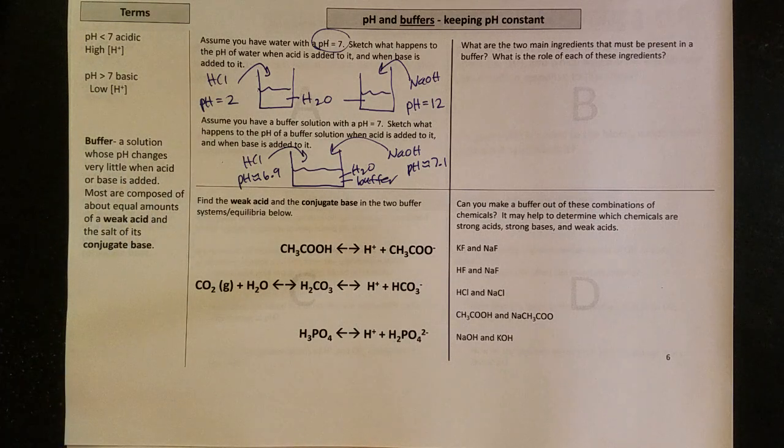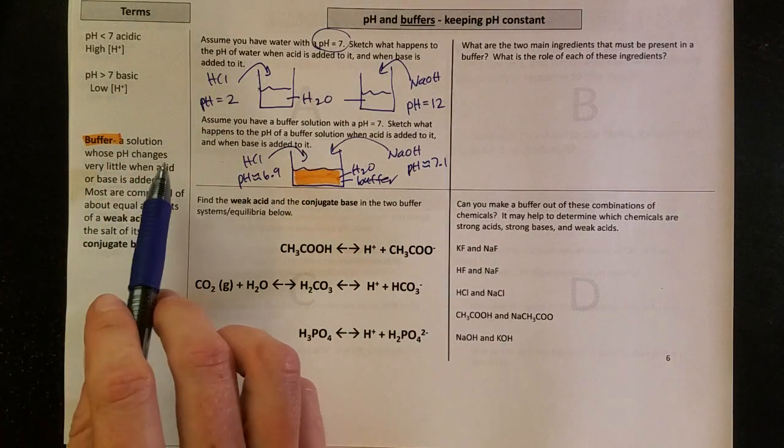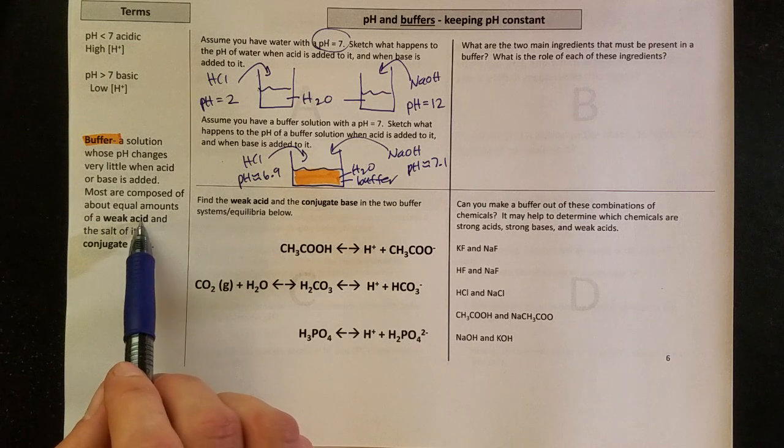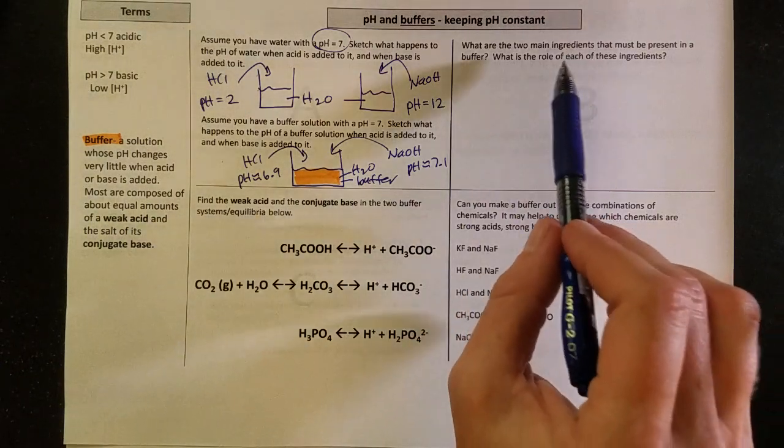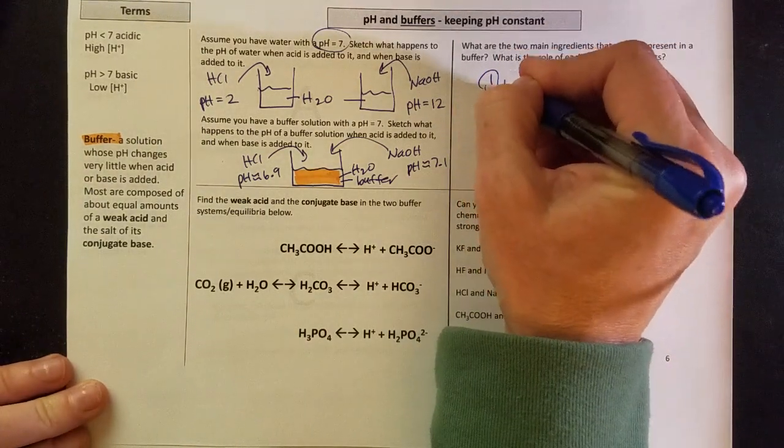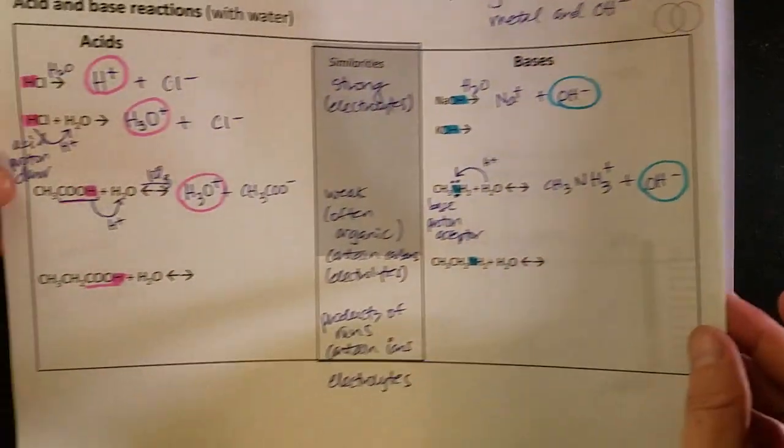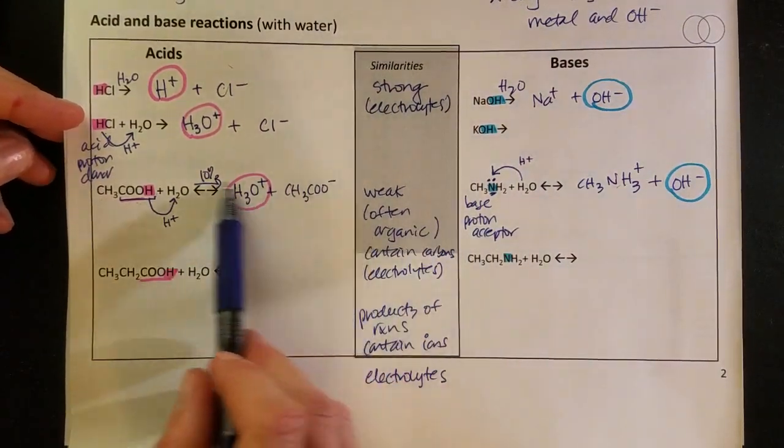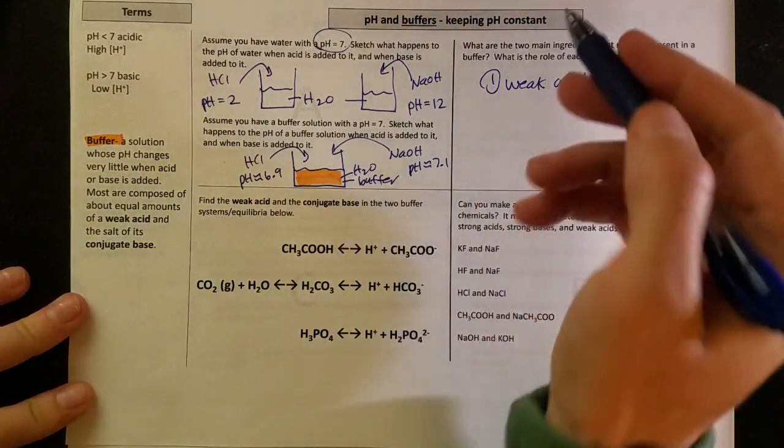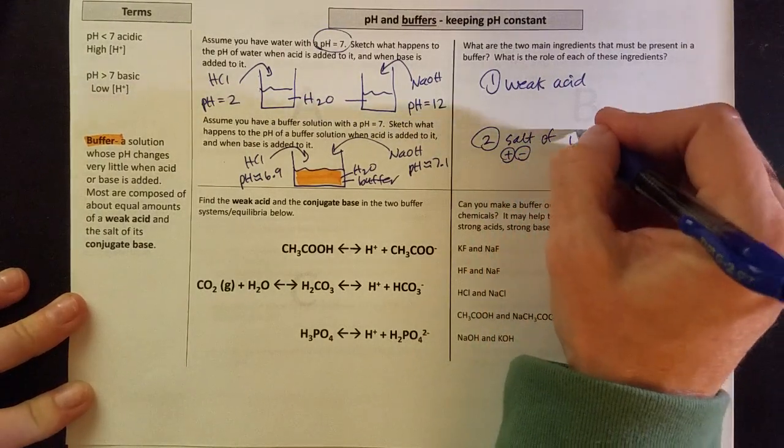So if we look over here at the definition of a buffer. In this buffer solution, it's a solution whose pH changes very little, so small drops, small rises, when you add acid or base. Most buffers have two ingredients, a weak acid and a salt of its conjugate base. So the two main ingredients that have to be present in a buffer, generally what we're going to see is a weak acid. And if you remember at the very beginning today, on slide two, we looked at strong acids and weak acids. So we're thinking about weak acids, something like acetic acid, not hydrochloric acid. I need a weak acid and I need the salt, meaning that there's positive and negative ions, of its conjugate base.